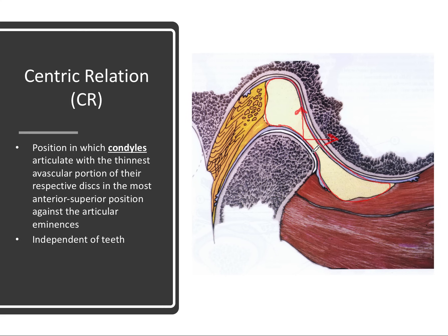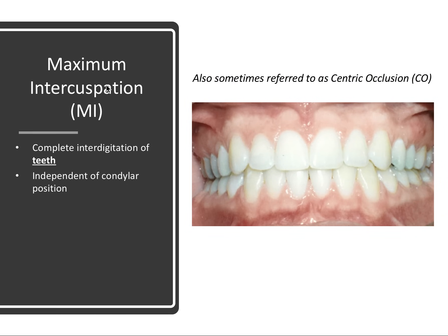Notice that the teeth aren't important in centric relation — this image doesn't even have any teeth depicted. It's all about the condyles. Centric relation is completely independent of teeth, and this is a very helpful way to think about CR, especially when we contrast it to maximum intercuspation.